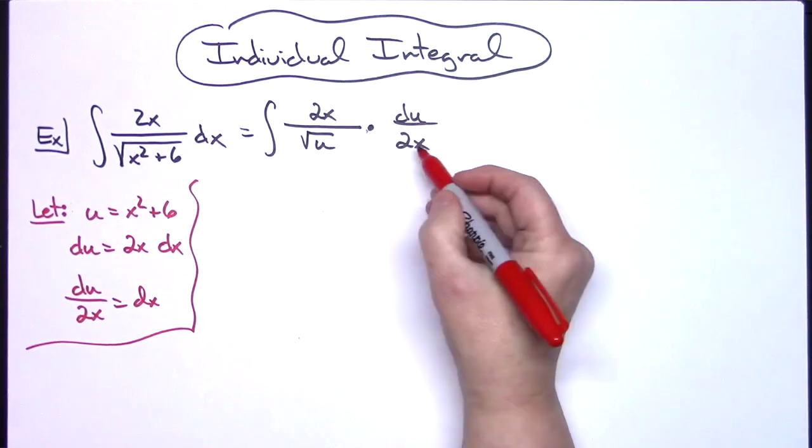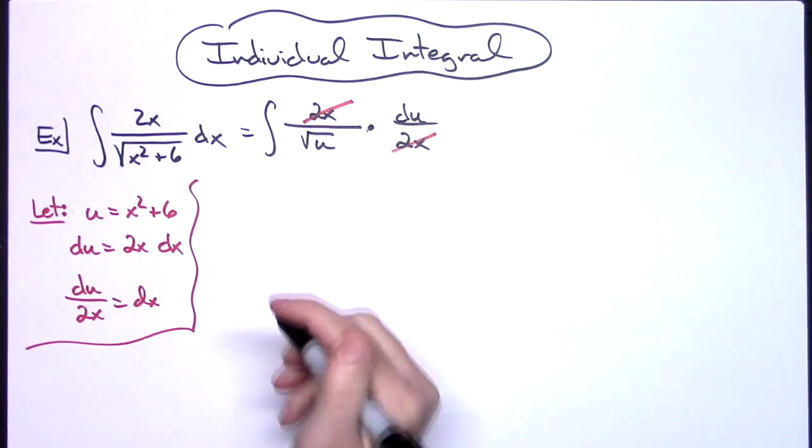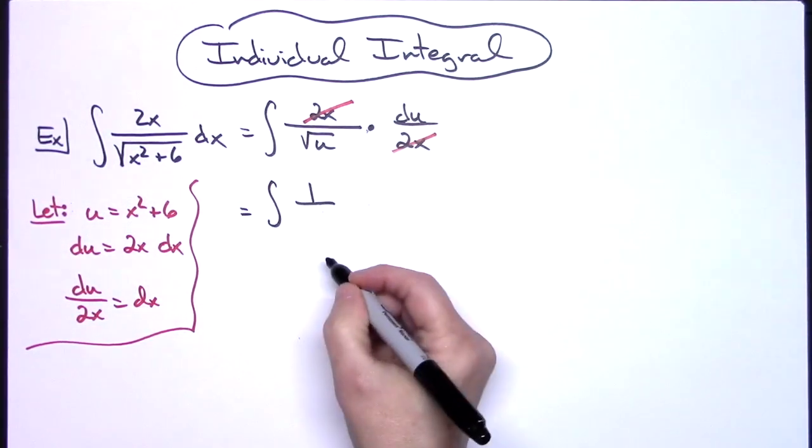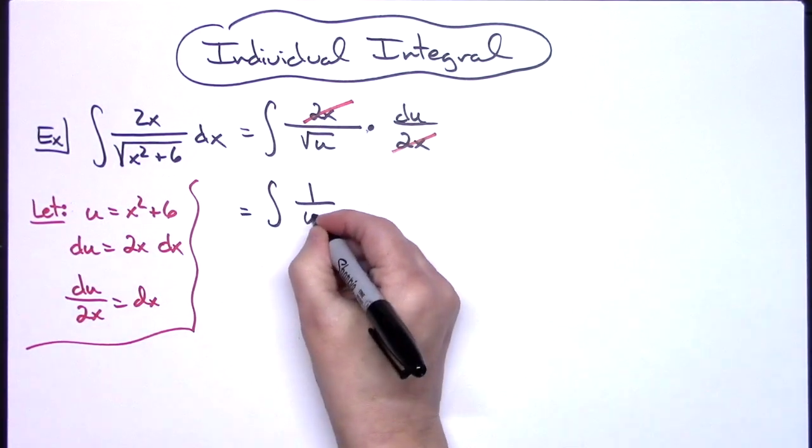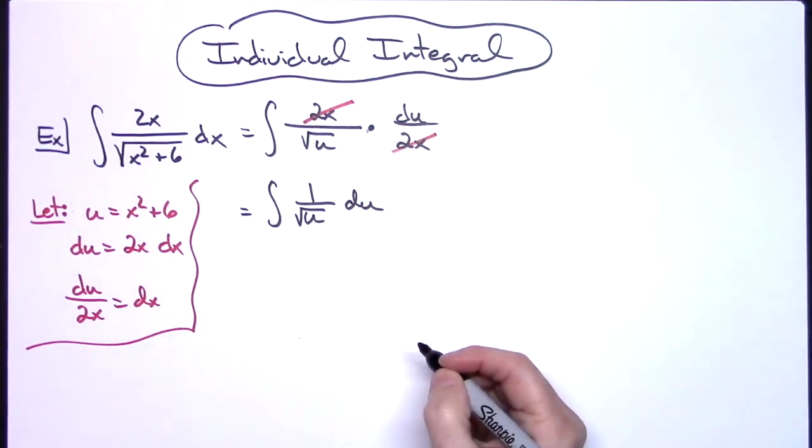Now we can clearly see that the 2x and 2x is going to cross out, and that's going to leave me with the integral of 1 over square root of u, du. I'm all in terms of u here.